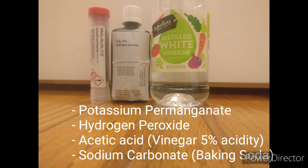The first way to produce oxygen requires potassium permanganate, hydrogen peroxide, and acetic acid, commonly known as vinegar. I recommend non-colored and 5% acidity. The second technique only requires baking soda and hydrogen peroxide. In these two reactions, the hydrogen peroxide is the form of the oxygen.